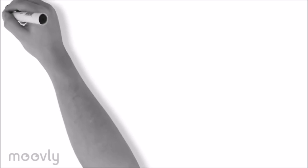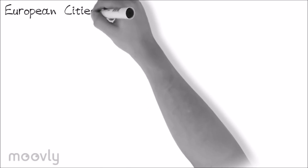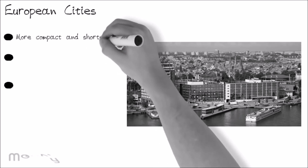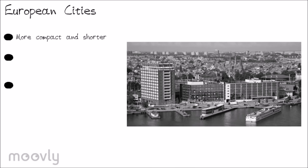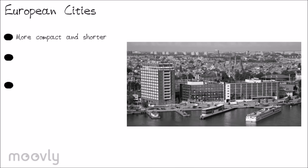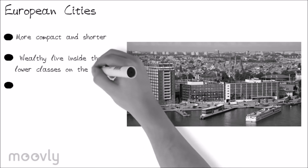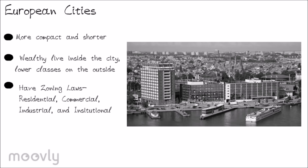European cities are older than American cities and thus have different structures. The cities are more compact and shorter, with skyscrapers placed on the outside of town, because they follow a philosophy that what is old should be preserved. They are also arranged opposite to American cities — the wealthy live in the central city and the lower classes live in the suburbs. European cities also have zoning laws split into four types: residential, commercial, industrial, and institutional, though the zones can be mixed.